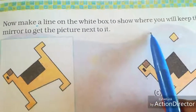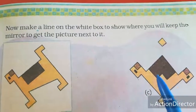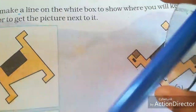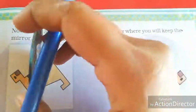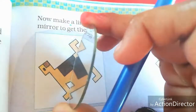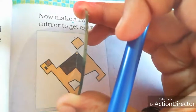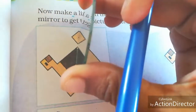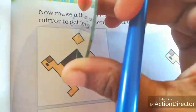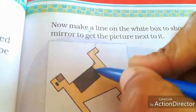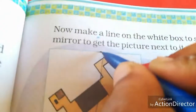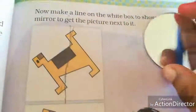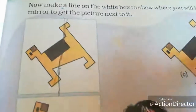Now make a line on the whiteboard to show where you will keep the mirror to get the picture next to it. Where will we keep the mirror? We have to keep the mirror here. Then only we can get an image like C. You can make a dotted line like this. Then you keep a mirror and you can see this type of image.